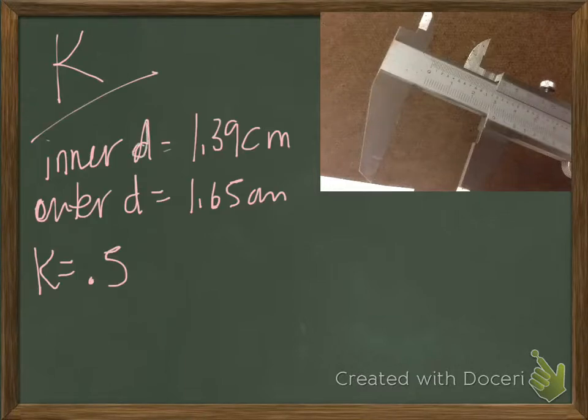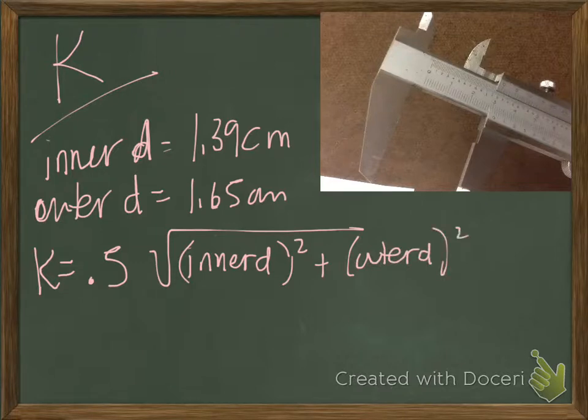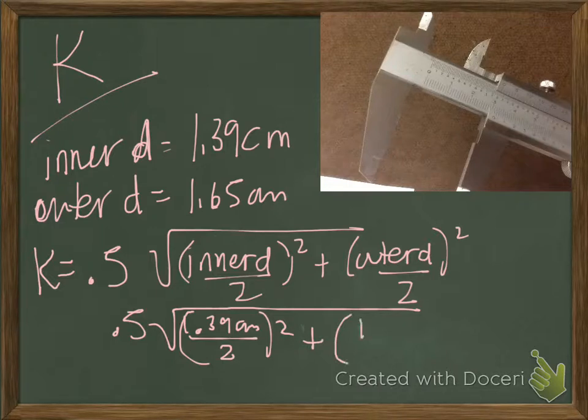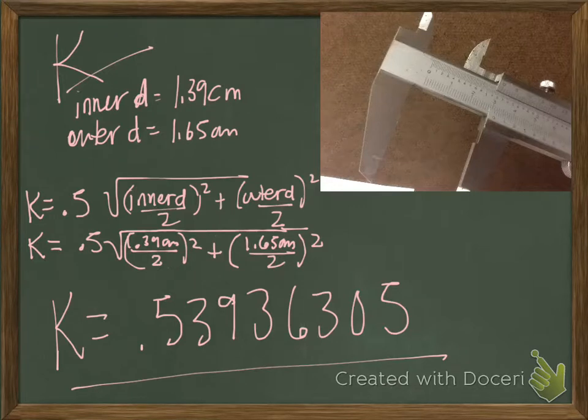All right, so we've got our inner and outer dimension diameter measurements using our calipers. So K is equal to 0.5 times the square root of inner radius squared plus outer radius squared. It says radius on the paper. It is radius, not diameter. So divided by 2. So 0.5 times 1.39 centimeters divided by 2 quantity squared plus 1.65 centimeters divided by 2 squared. Let's get our K value. So we've gotten our K value for this particular piece of steel pipe.